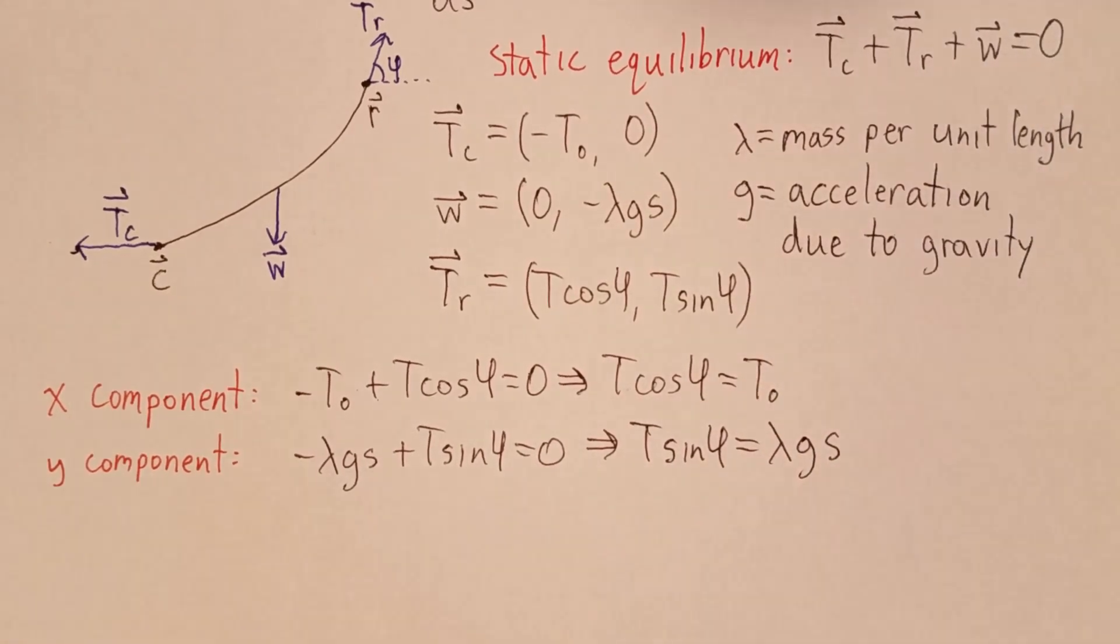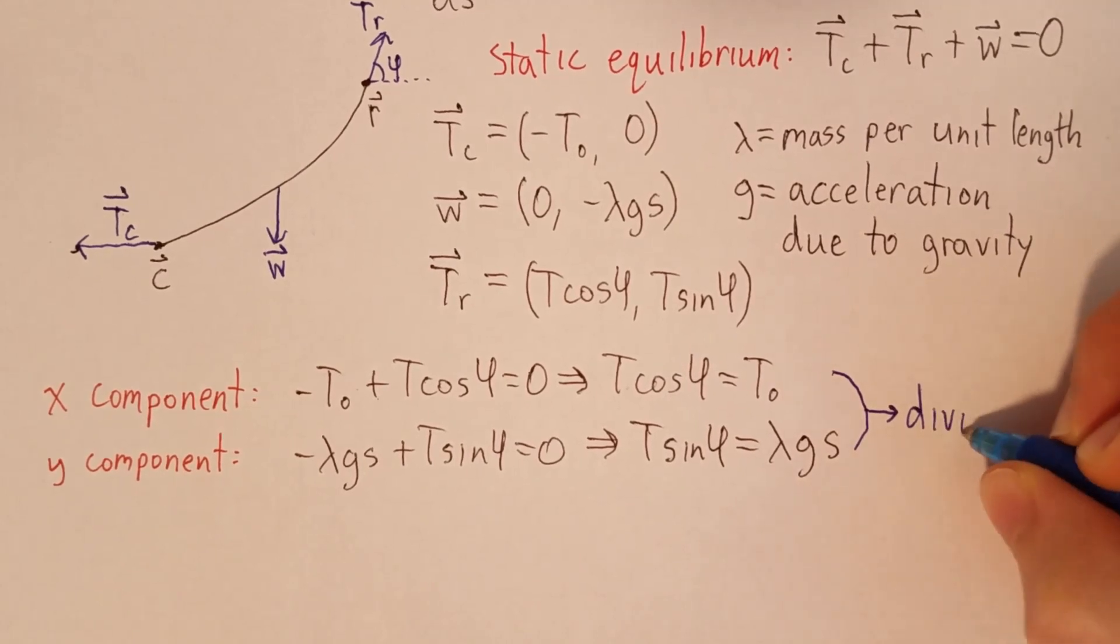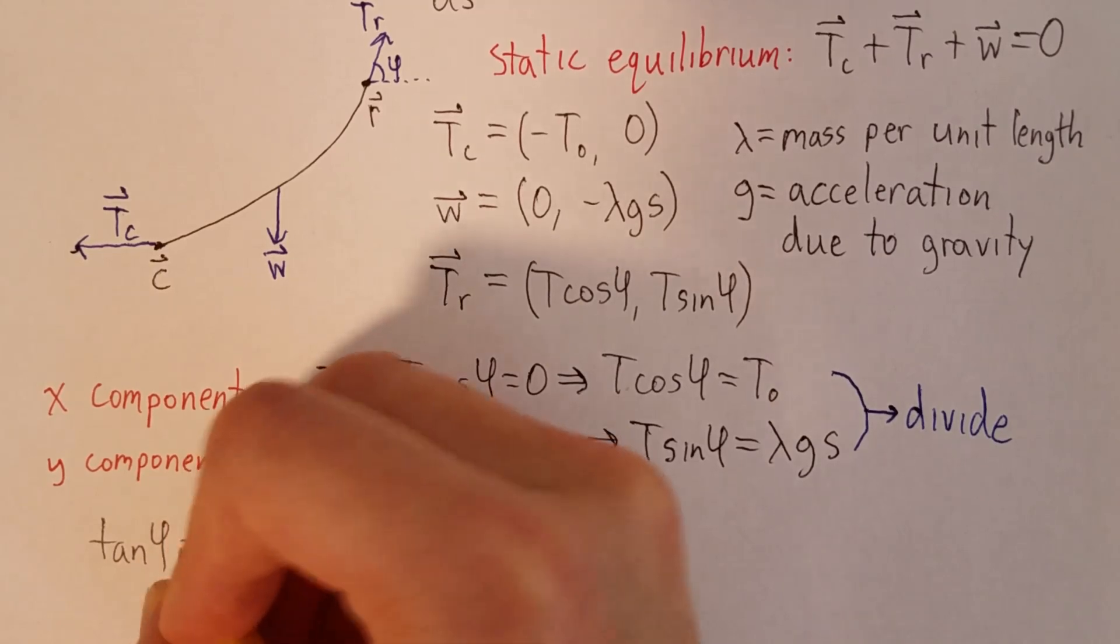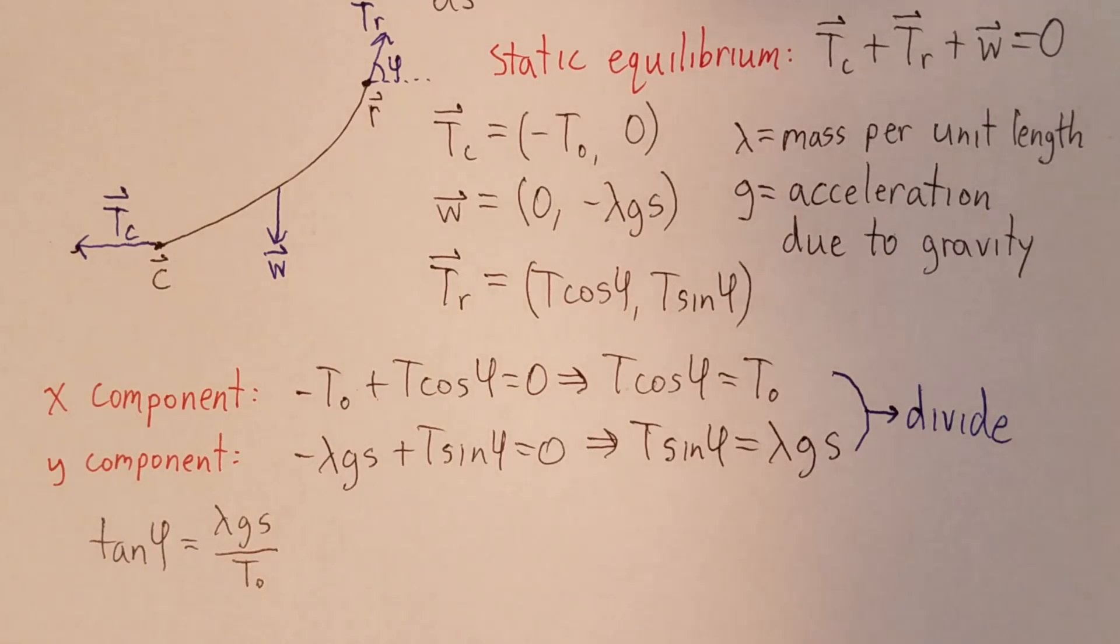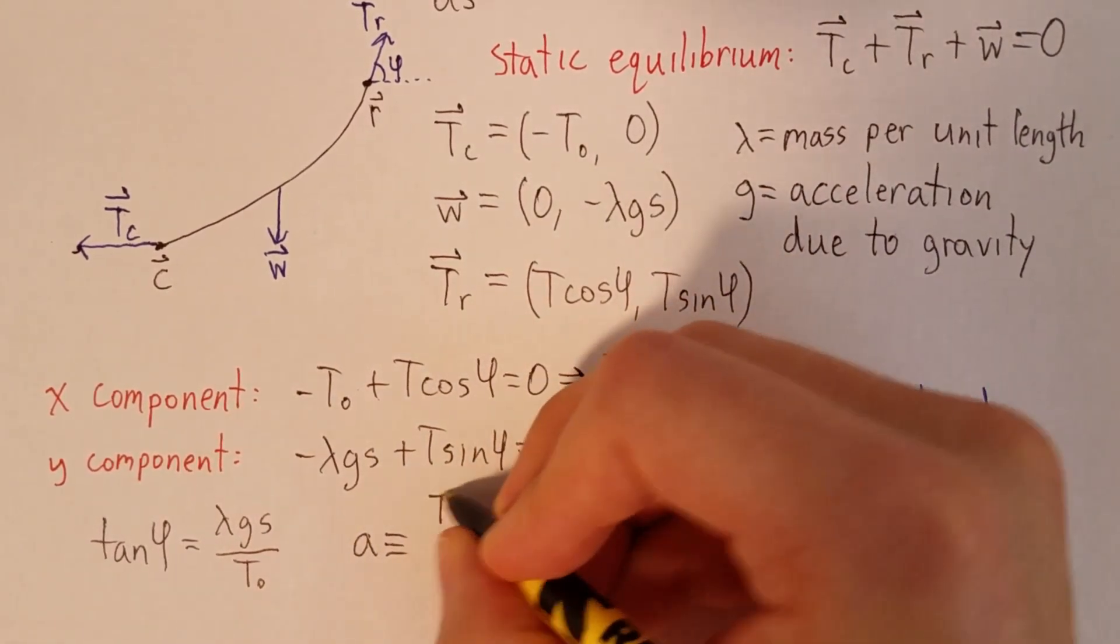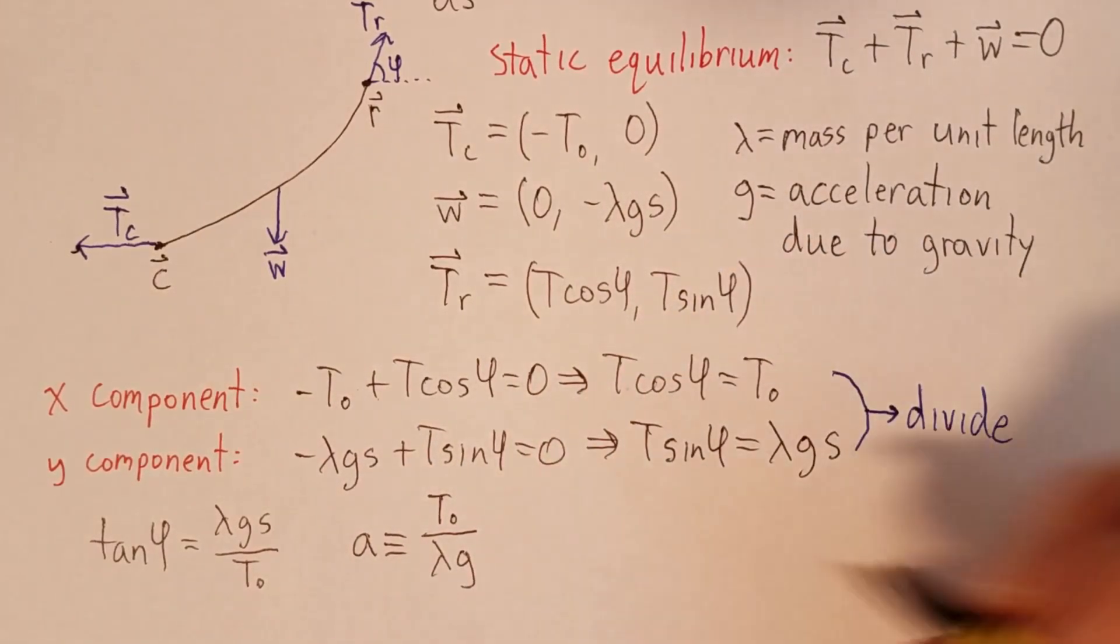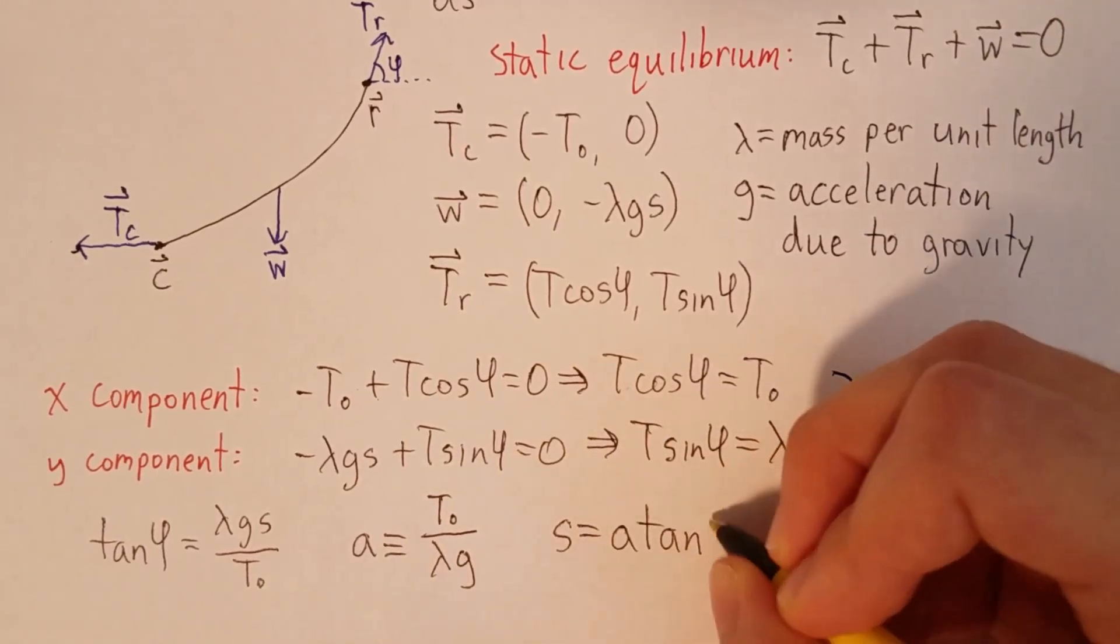So in these two equations, we have the independent variable s, but we have two dependent variables, T and φ. And so we would like to get rid of one of those. So we can do that by dividing. If we divide the bottom equation by the top one, we eliminate T, and we find that tangent of φ is equal to λgs over T0. So there's a lot of constants floating around in this expression. So let's go ahead and combine them all into one. We'll define a to be T0 over λg. And so then we have s arc length is equal to a tangent of φ.